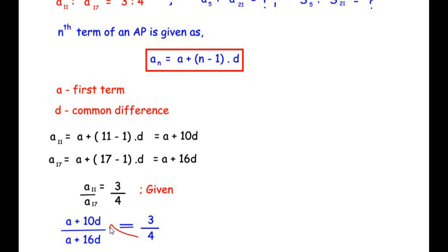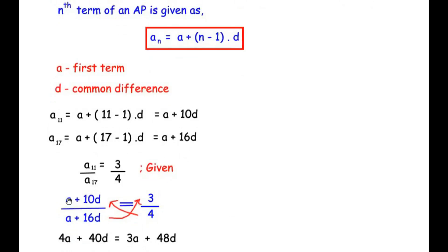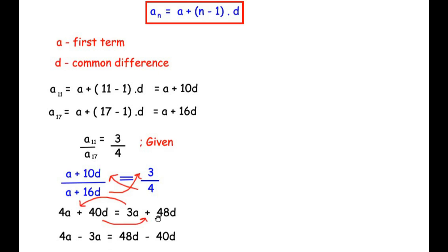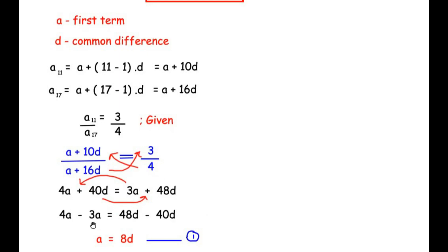Cross multiplying: 4(a + 10d) = 3(a + 16d), which gives 4a + 40d = 3a + 48d. Gathering like terms: 4a - 3a = 48d - 40d, so a = 8d. We consider this as Equation 1.